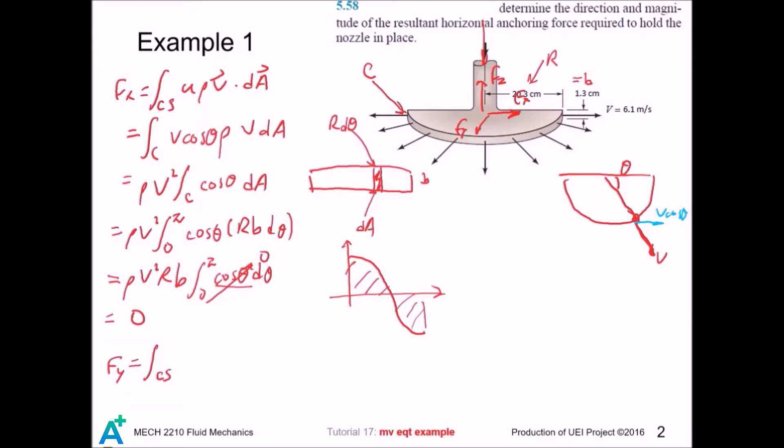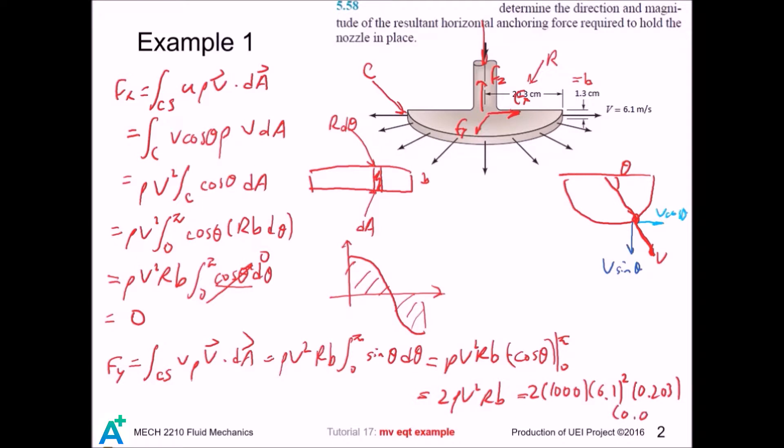And v is of course v sine theta. So that will become... and if we plug in the values, which is non-zero. This result makes sense, since we observe the velocity is symmetric along this line. And all the things going in this direction will be cancelled out, but there is nothing to cancel out the component from this direction.